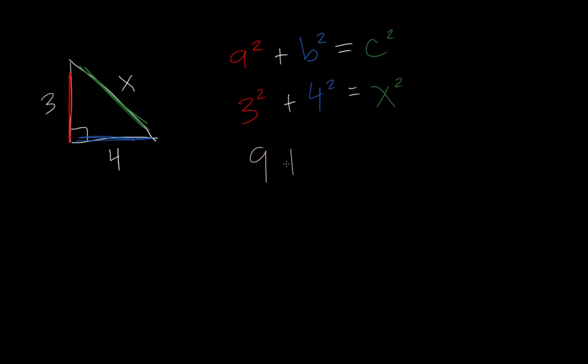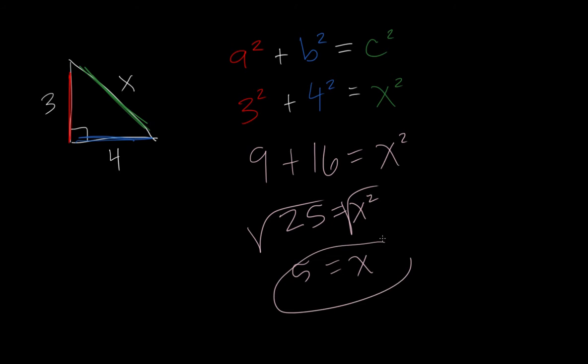So, it's going to be 9 plus 16 equals x squared. Add those together, we get 25. Then we square root both sides. We end up with 5 equals x. And the reason why we don't use a plus or minus in this situation is because we're talking about a distance, and a negative distance in this case doesn't make sense.